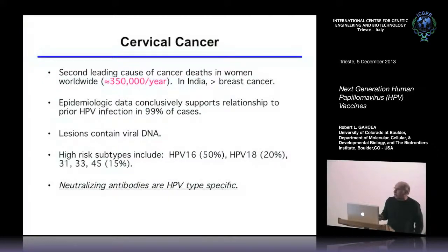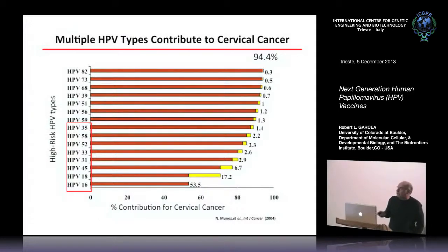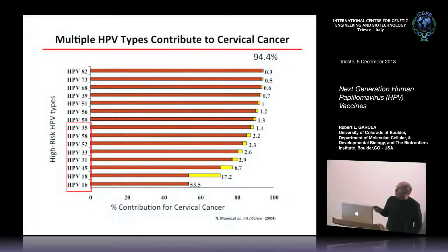Also important for making vaccines: neutralizing antibodies against any specific type are really type-specific — there's very little cross-reactivity between antibodies against type 16 and 18 and so forth. So if you're going to have a vaccine, you're going to have to put in a lot of different types. The current vaccines include proteins from HPV 16 and 18, which cover about 70 percent of all high-risk papillomavirus types. There are other types as well, which complicates making additional vaccines because of diminishing returns.